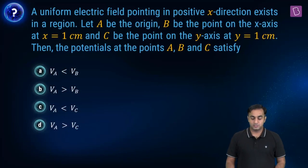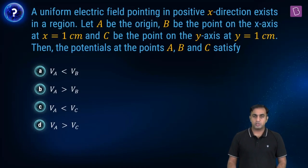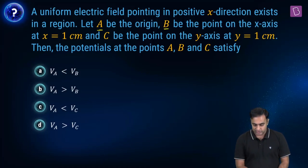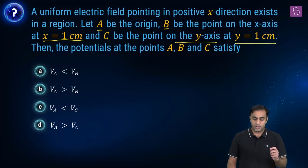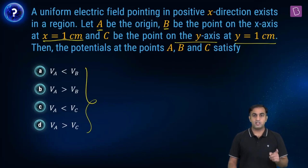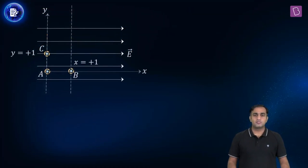Now let's look at the next question. We are considering a uniform electric field along the positive x-axis in a given region. There are three points: point A at the origin, point B on the x-axis at x equals 1 centimeter, and point C on the y-axis at y equals 1 centimeter. We need to choose the correct option concerning the electric potentials at points A, B, and C.